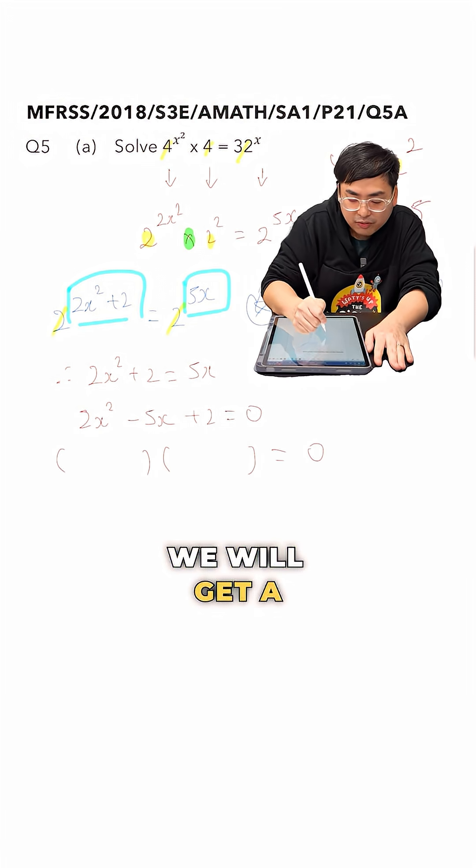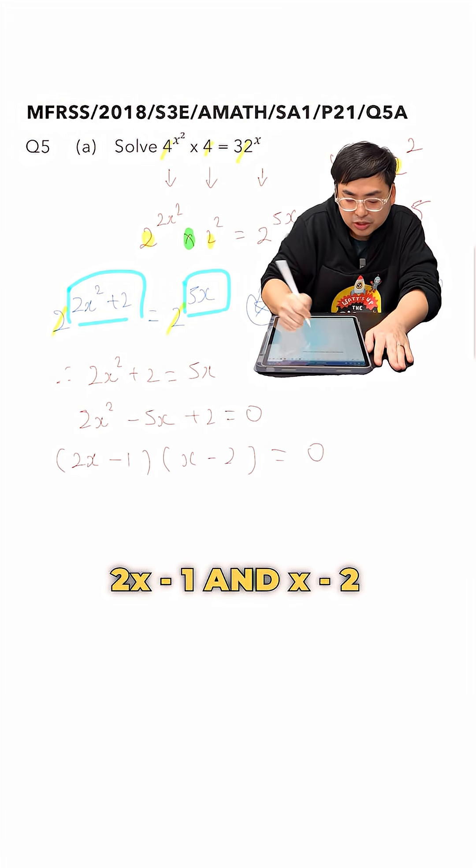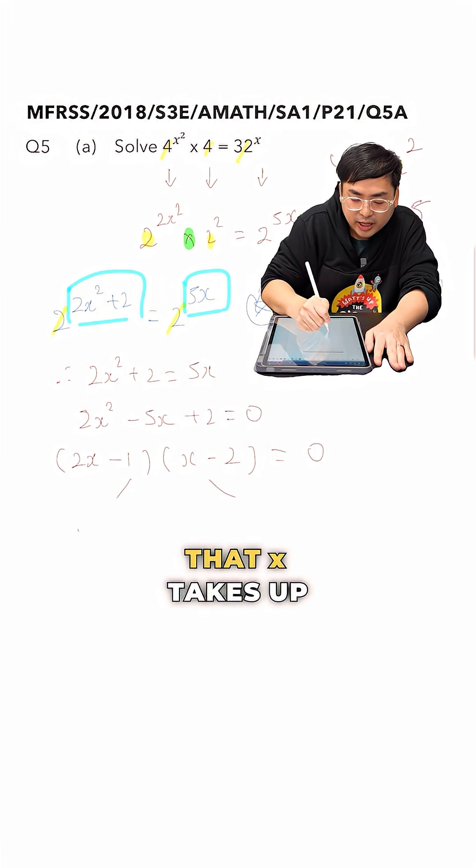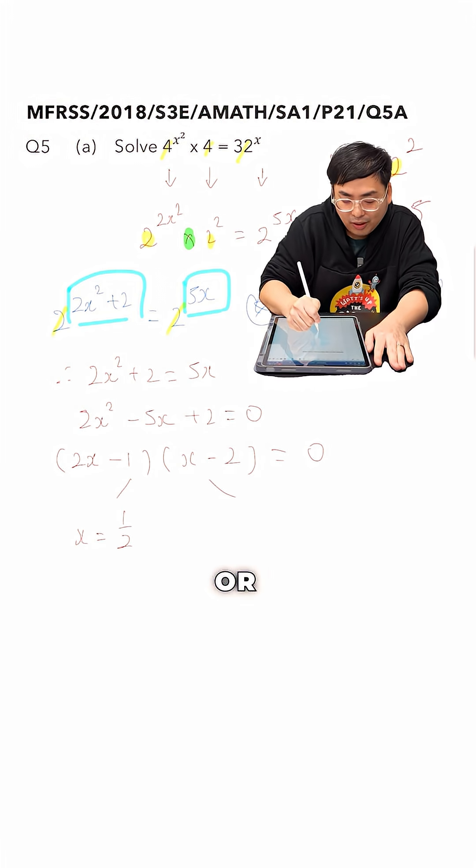Doing it correctly, we will gather a fully factorized form of 2x minus 1 and x minus 2. From here, we can conclude that x takes up either the value of half or 2.